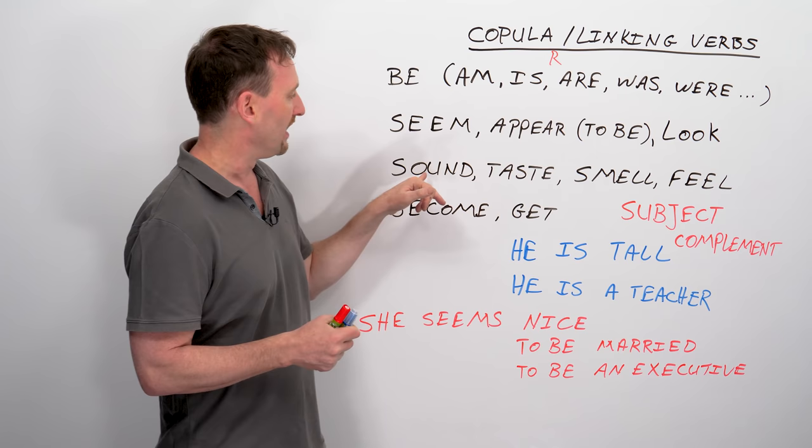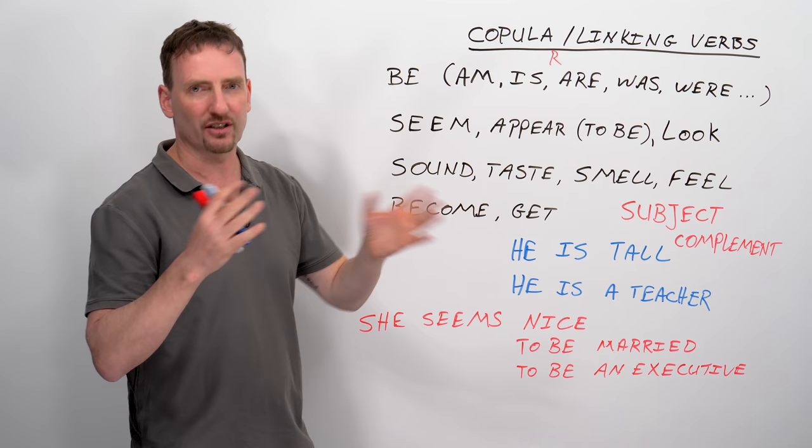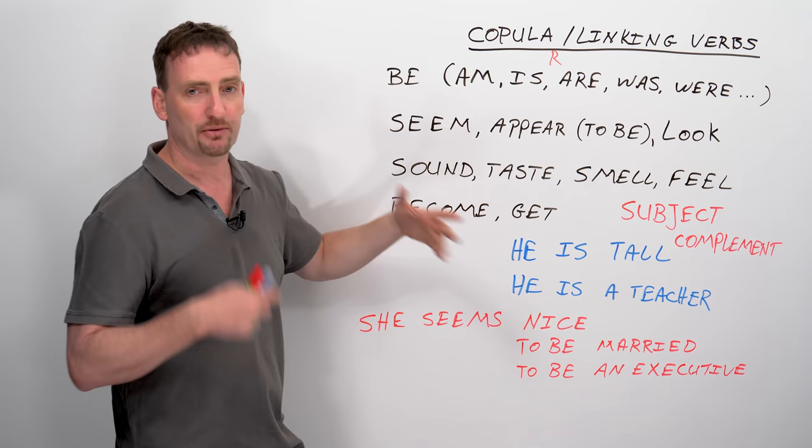These are also state verbs, and they can also be action verbs, but we're going to look at them as copula verbs. And you'll notice that all of these copula verbs are not action verbs. There is no action happening. So be careful with these four, because you can use them as action verbs as well. Like if you say something and I say yeah that sounds right, or I can sound the alarm. So action, active or not.